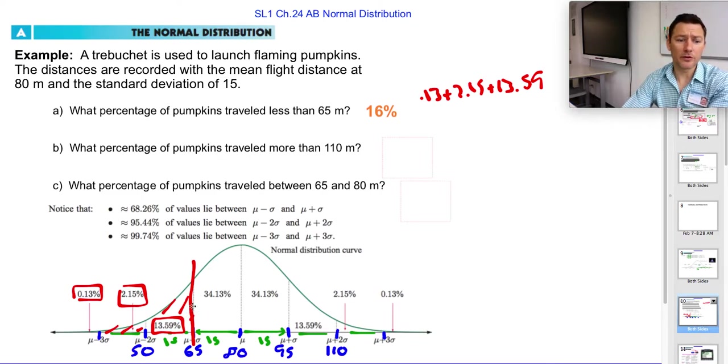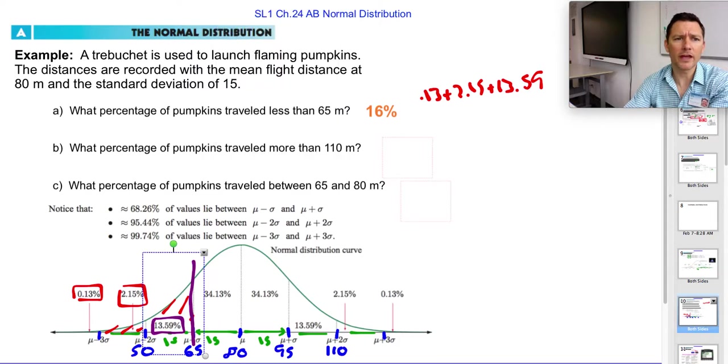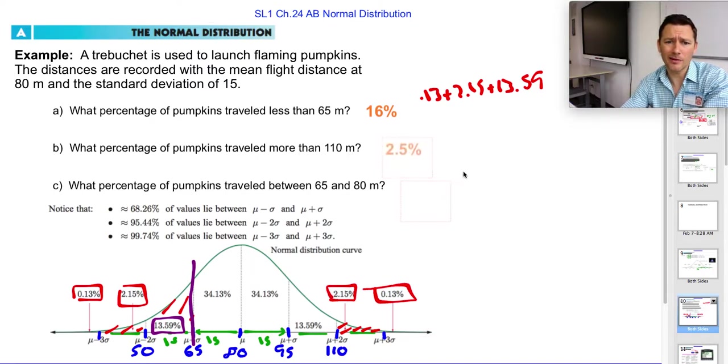What percentage of pumpkins traveled more than 110? Well, more than 110 is from here up. I thought we could do it in red. So it's only this and this, so like 2.2, I don't know, 2.5. Great. You just added those up.